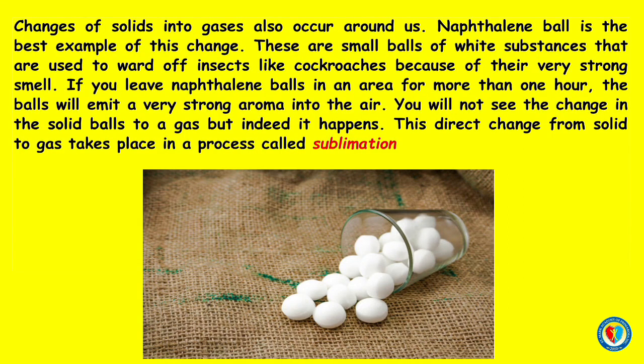Changes of solids into gases also occur around us. Naphthalene balls are the best example of this change. These are small balls of white substances that are used to ward off insects like cockroaches because of their very strong smell. If you leave naphthalene balls in an area for more than one hour, the balls will emit a very strong aroma into the air. You will not see the change in the solid balls to a gas, but indeed it happens. This direct change from solid to gas takes place in a process called sublimation.